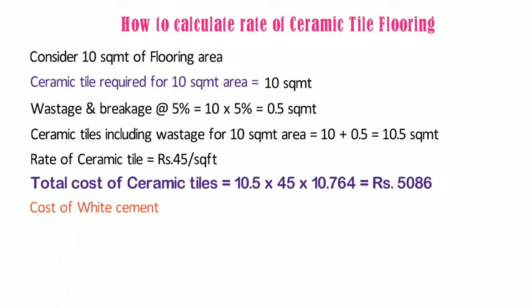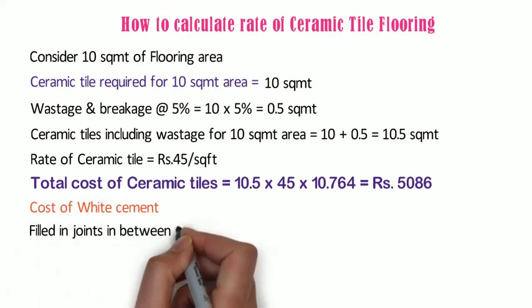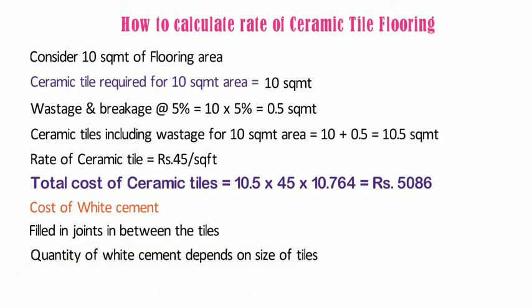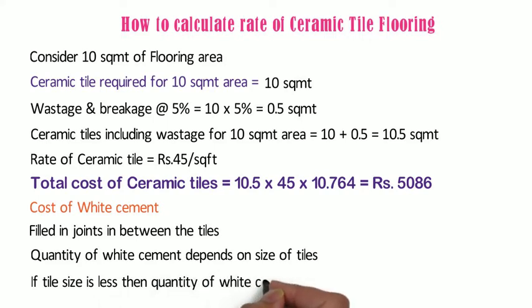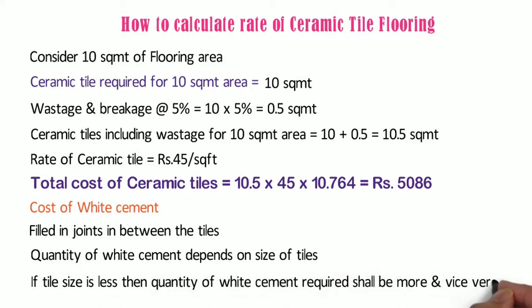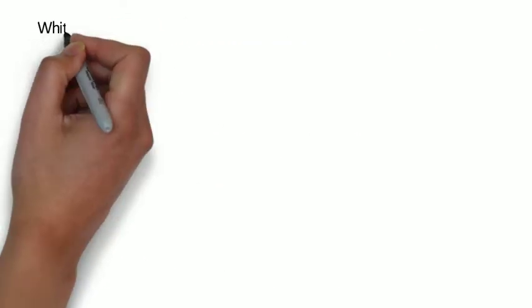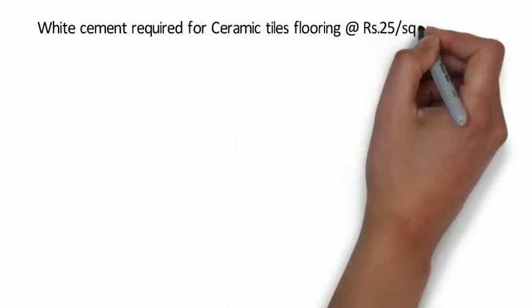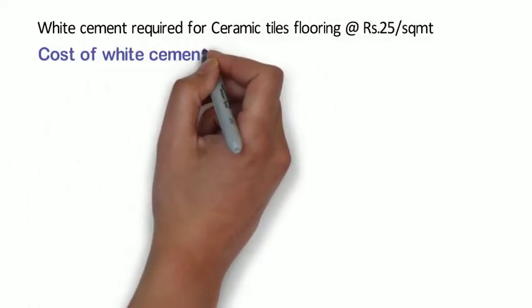Now let us calculate the cost of white cement. White cement is filled in the joints between the tiles. The quantity of white cement depends on the size of tiles — if tile size is less, more white cement is required, and vice versa. White cement cost is very low so we will not go into detailed calculation. In bathroom areas, the joint width should be kept minimum due to continuous water usage, so that water does not seep into the floor through joints. White cement required for ceramic tile flooring is at the rate of 25 rupees per square meter, so 10 x 25 = 250 rupees.